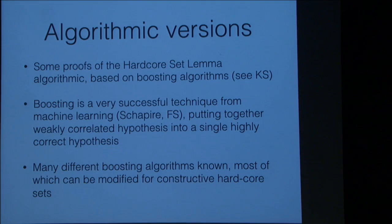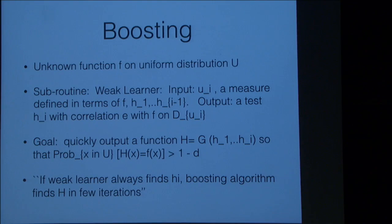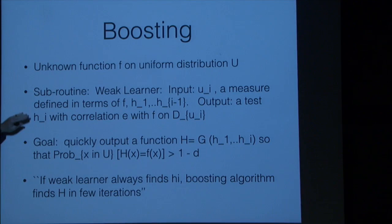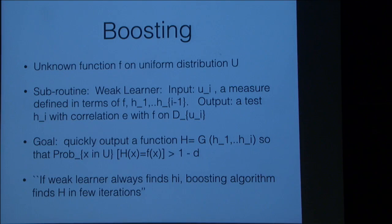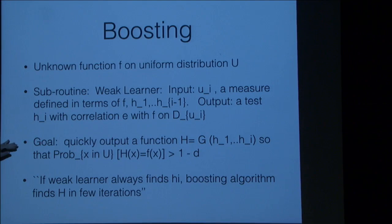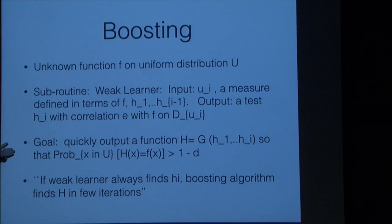Boosting is such a successful technique that a lot of effort has been devoted to optimizing it, giving us many different boosting algorithms to pick from. Each one — with one parameter that boosting people don't normally care about optimized — gives a different kind of algorithmic dense model theorem. We're going to try to convince the learning theory people that they actually care about algorithmic dense model theorems. In boosting, you have an unknown function on some distribution, and an unspecified weak-learner subroutine that, given a distribution specified by a measure, produces a hypothesis from your class of tests that correlates with the function a half plus epsilon of the time.